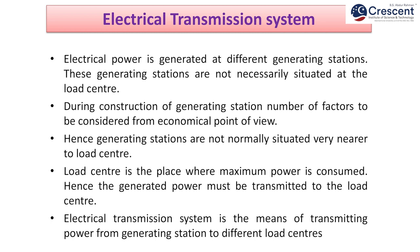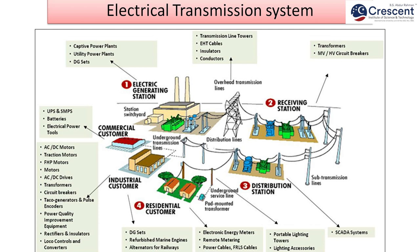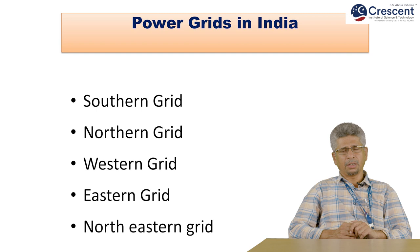Electrical power is generated at different generating stations. These generating stations are not necessarily situated at the load center. During construction of a generating station, a number of factors are considered from an economic point of view. Hence, generating stations are not normally situated very near to the load center. The load center is the place where the maximum power is consumed. Therefore, the generated power must be transmitted to the load center. The electrical transmission system is the means of transmitting power from generating stations to the different load centers, distributing power through T&D lines.